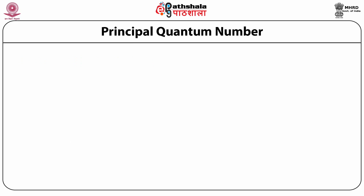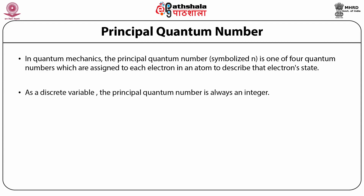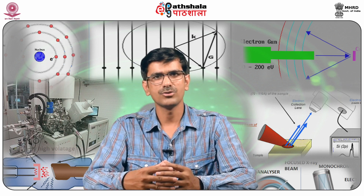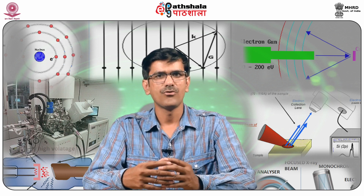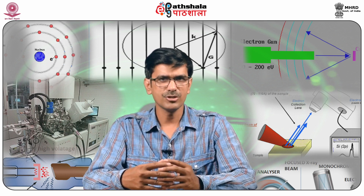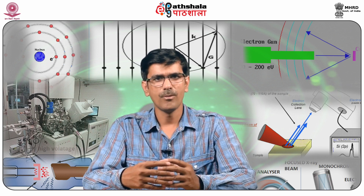In quantum mechanics, the principal quantum number n is always an integer. As n increases, the number of electronic shells increases and the electron spends more time further from the nucleus, is at a higher potential energy, and is therefore less tightly bound to the nucleus. This describes the size of the orbital or energy level of the atom. The principal quantum number was first created for use in Bohr's model of the atom to distinguish between different energy levels, and was later incorporated into the more complex theory of atomic orbitals.